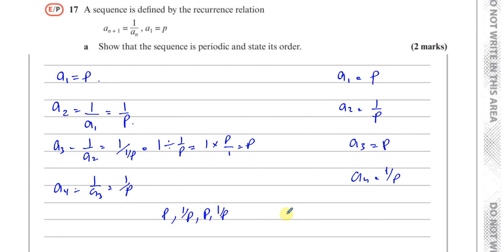It's periodic, it repeats, so therefore it's periodic. And the order of the periodic sequence is equal to 2, because each two terms keep repeating. It repeats after two terms. So that's part A, pretty simple.